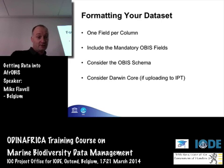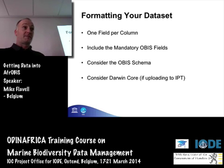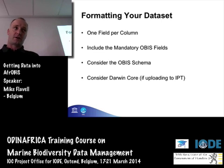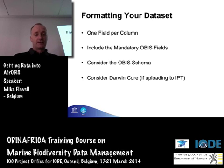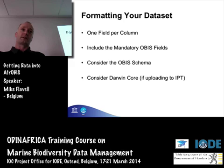Before you upload your dataset to an IPT, you need to make sure there's one field per column, you've included the mandatory OBIS fields, and you need to think about the OBIS schema because this data will go into OBIS. You also need to consider the Darwin Core fields as well, because you have to map fields to Darwin Core using the IPT. You may find there are more columns in your dataset than are in the OBIS schema — you can still map those fields, but they won't get included in the OBIS database.